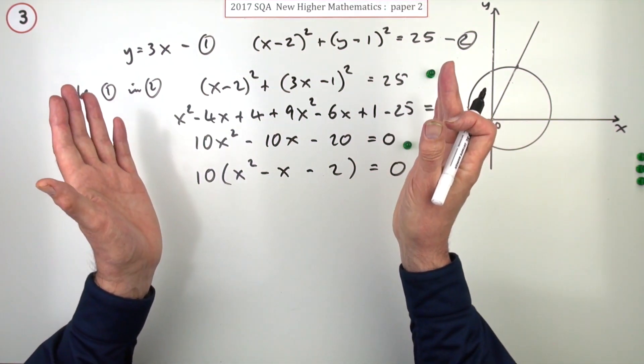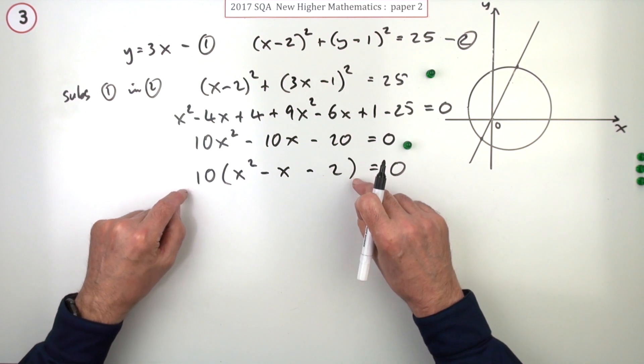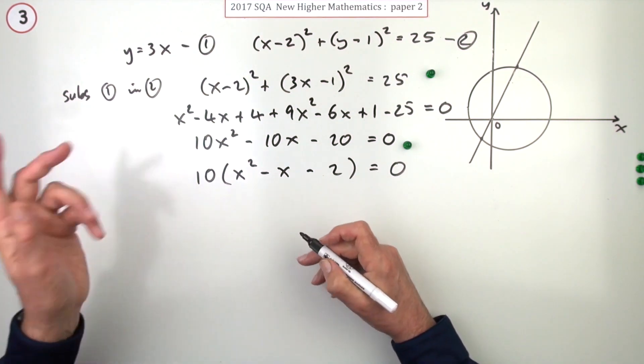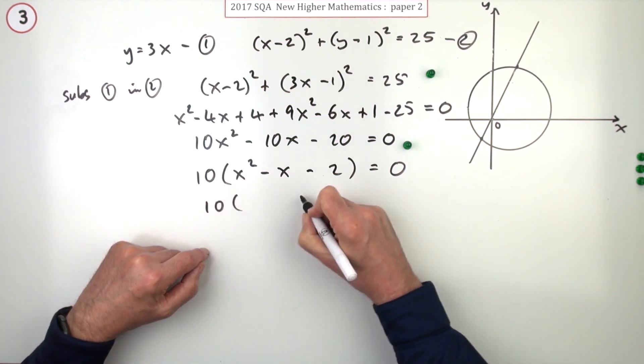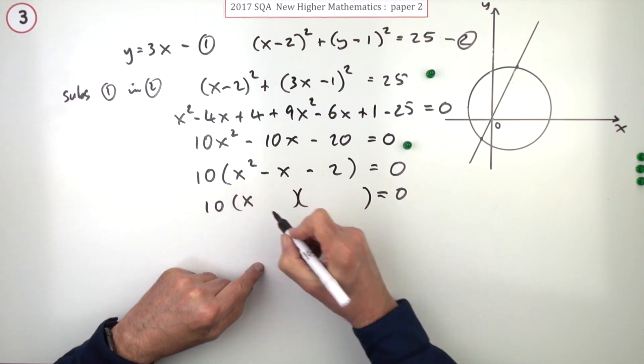But here this is essentially a disposable equation - it's of no further use to you apart from finding these two roots, so that 10 can go. But let's just keep it there to keep them happy.